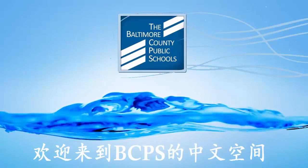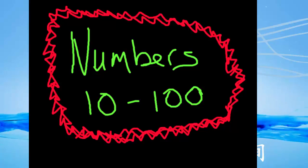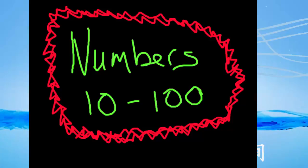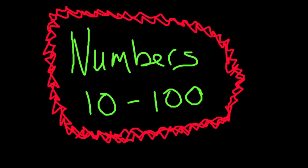欢迎来到BCPS的中文空间。Welcome to the BCPS Chinese Zone. 大家好,今天我们来学习数字10到100。Today we're going to learn our numbers from 10 to 100. Now you should already know 1 through 10: 一二三四五六七八九十。Chinese numbers are actually quite simple.